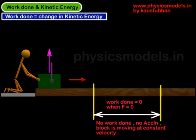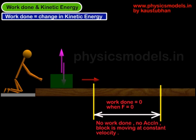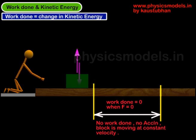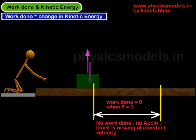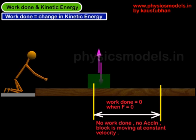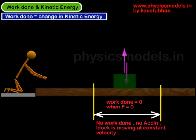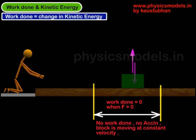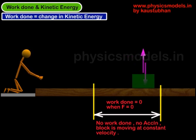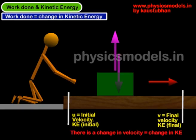Now coming to the second part of the displacement: the forward force arrow disappears, so the block is moving by its own inertia, moving with constant velocity because there is no backward frictional force. If there was a frictional force, the block would slowly come to a standstill. There is no force acting on the block in the forward-backward direction, so the work done by the robot on the block is zero.